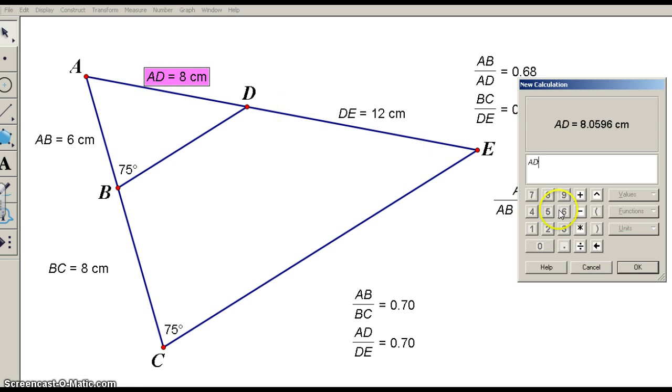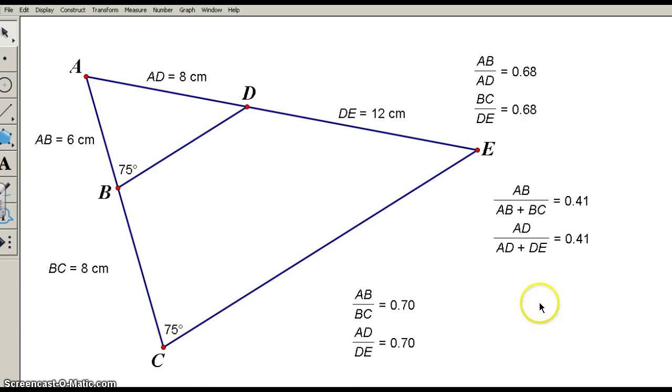And let's do another one. How about, now we do AD, which is the upper part compared to that whole segment of AE. So adding that. So AD over AE. What do we notice? Same ratio.